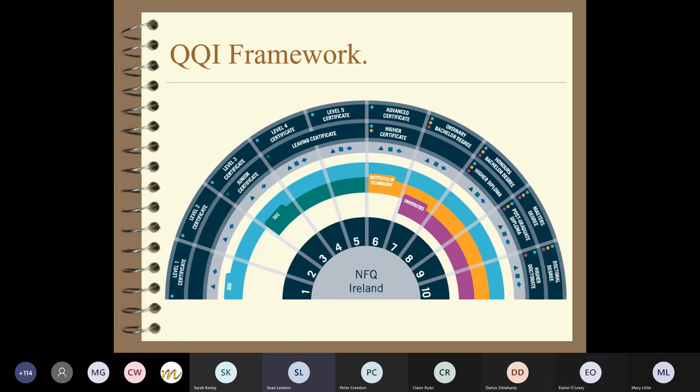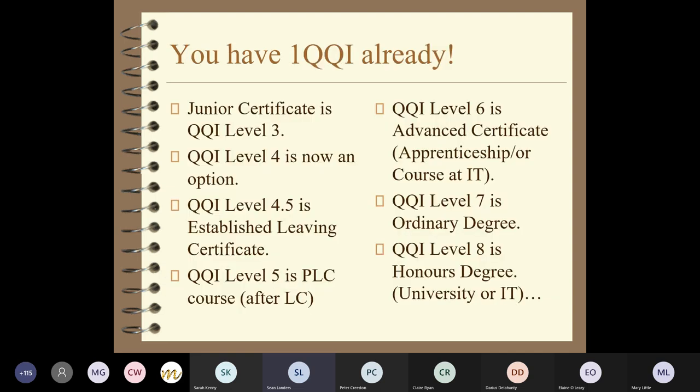This framework here is the framework of qualifications. There are levels going from level one through to level ten. We are down here at level three, which is the junior certificate. Every qualification you can do - from a short course certificate right up to a master's and a PhD - is listed in this framework.